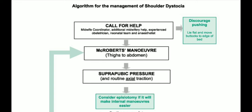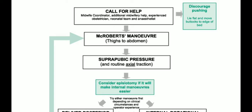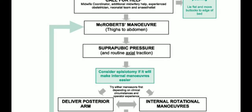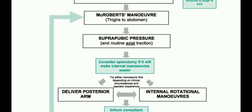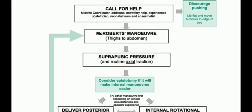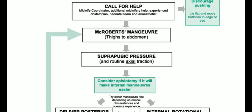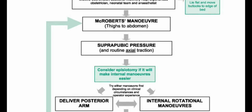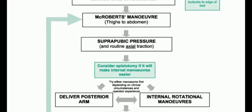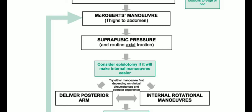At the same time, discourage pushing, ask the patient to lie flat, and move buttocks to the edge of the bed. The first maneuver would be McRoberts maneuver, where the thighs are brought to the abdomen. This is a very effective maneuver — approximately 90% of babies are delivered this way. The next step is suprapubic pressure with routine axial traction.